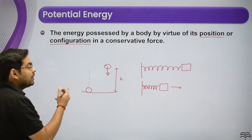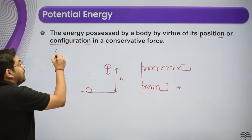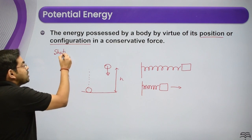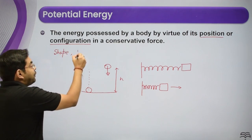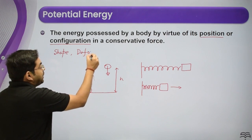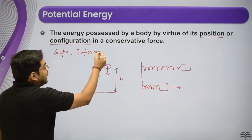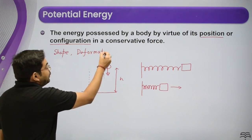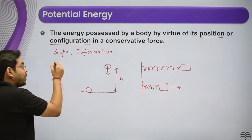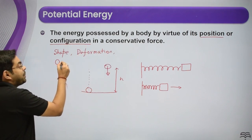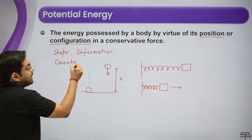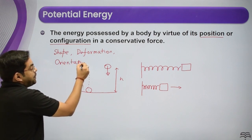So potential energy can arise due to position, configuration, shape, deformation (as in a spring), or orientation of the body.